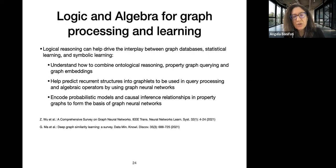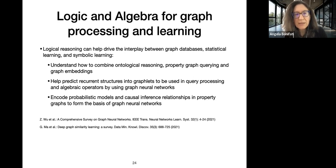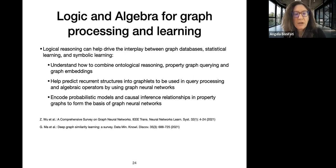Another research problem would be to study causal inference relationships and use probabilistic models in property graphs to encode graph neural networks. There is some work around this, but no connection with the graph database world yet — this is also an idea for future work.